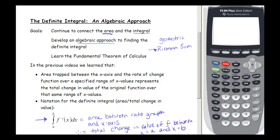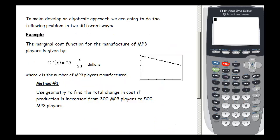To develop an algebraic method, let's look at an example. The marginal cost function for the manufacture of MP3 players is given by c prime of x equals 25 minus x over 50 dollars per player, where x is the number of MP3 players manufactured. Our first method is geometry: find the total change in cost if production is increased from 300 to 500 MP3 players.